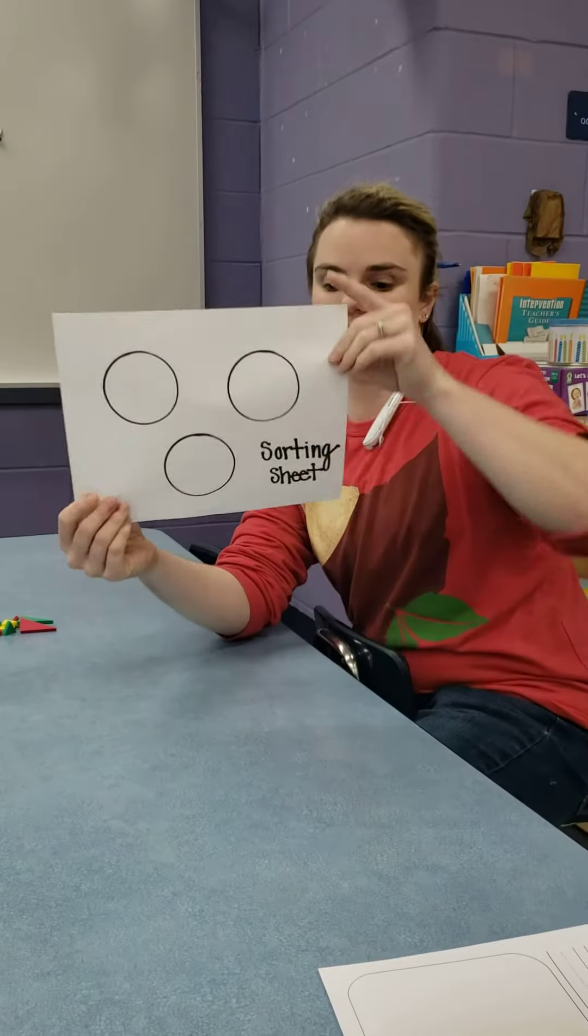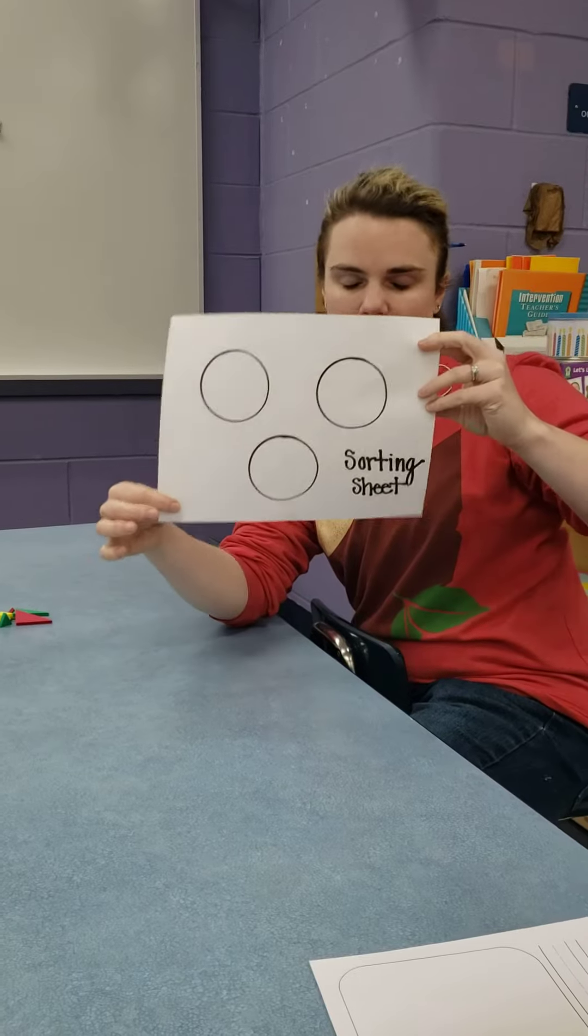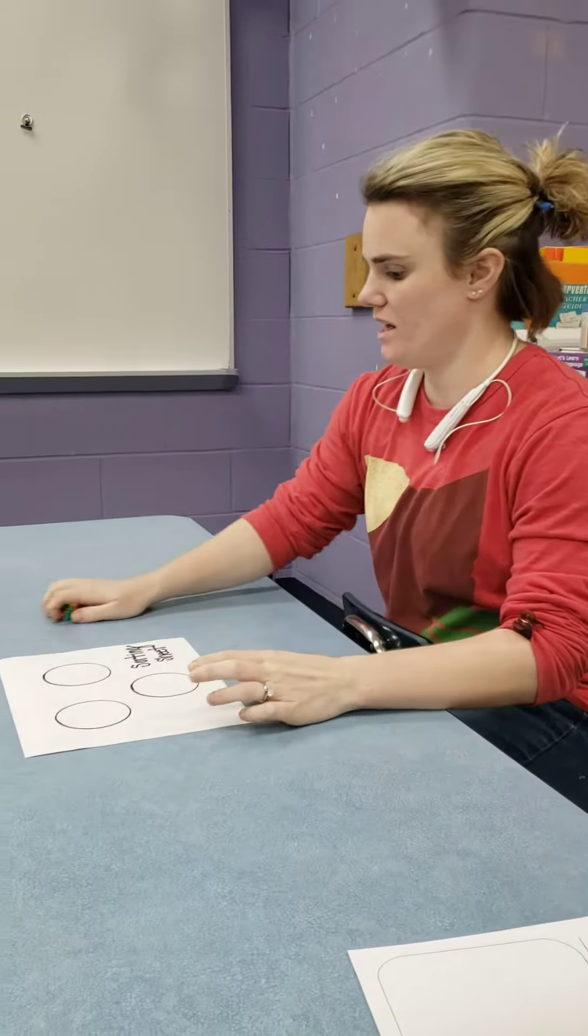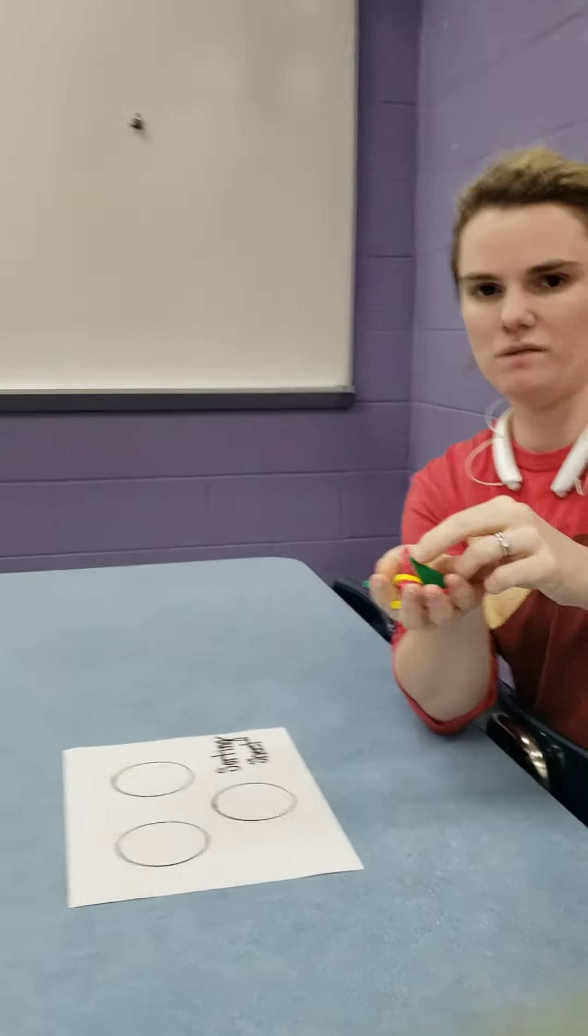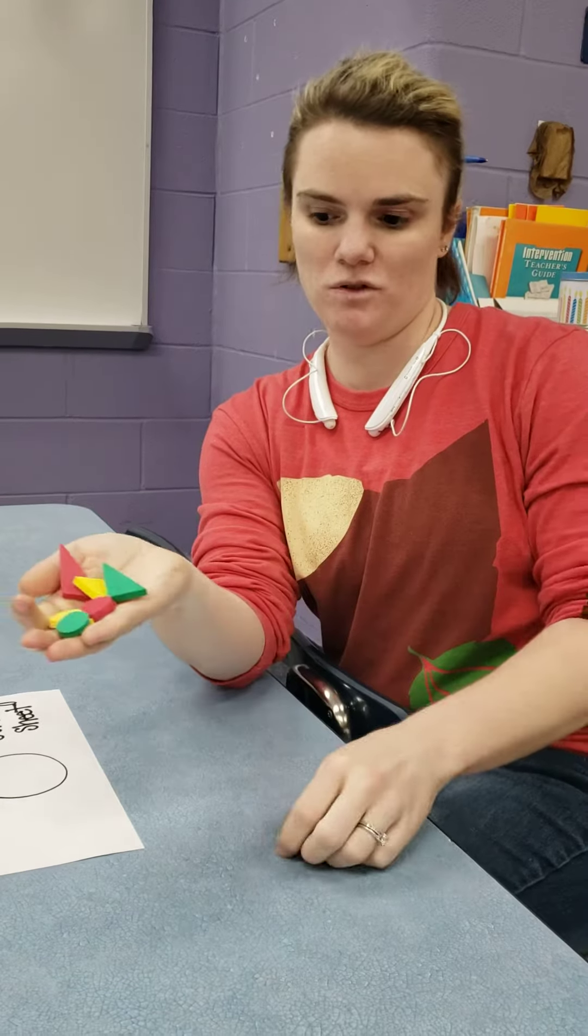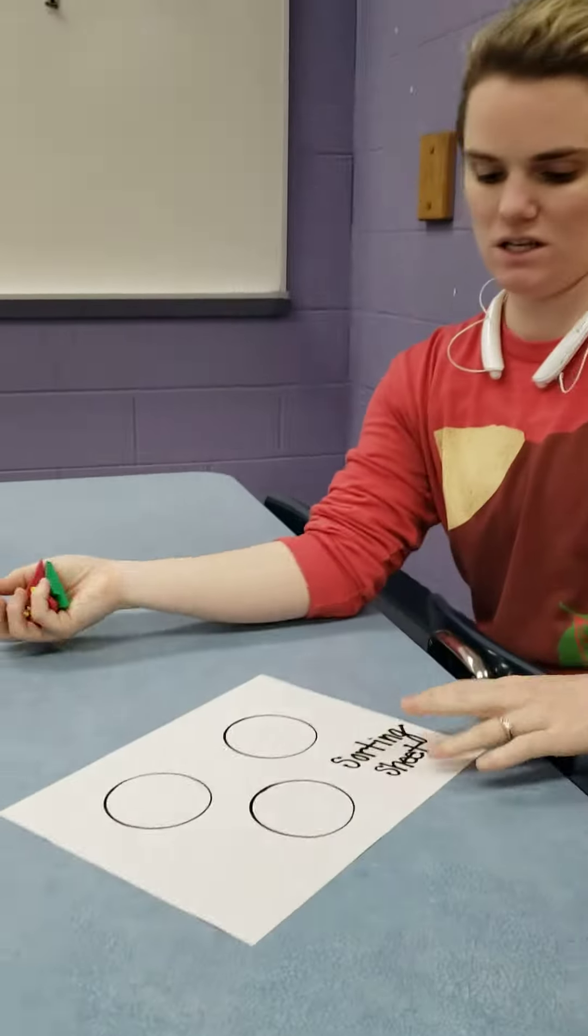Hi everybody. This is our sorting sheet that we're going to need to work with today. There was a bag of shapes - different sizes, different colors, and different shapes. Today's activity is we want the kids to sort the shapes.